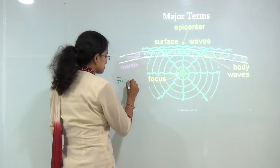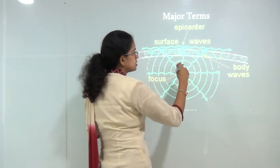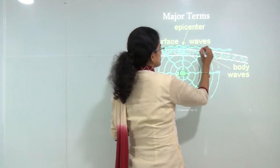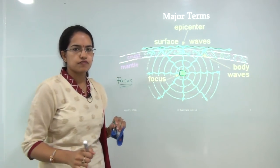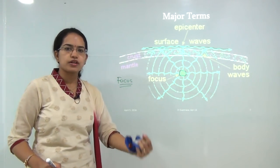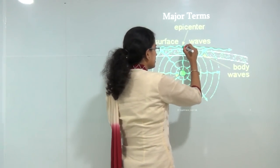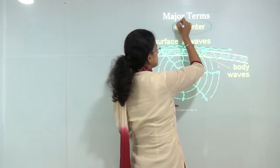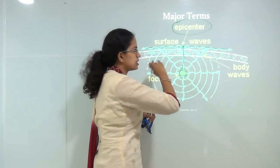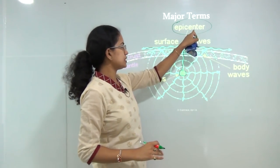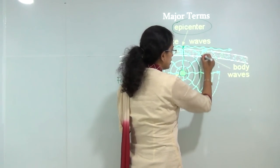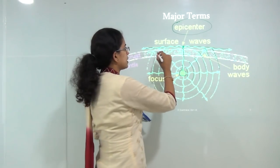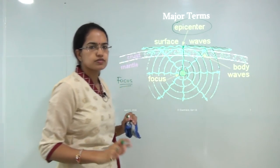The first term is focus: the region beneath the earth's surface where the earthquake initiates. Epicenter is the point directly above the focus lying on the surface of the earth. All the waves that start from the focus and move towards the surface are known as body waves, while all the waves that finally occur on the surface are known as surface waves.